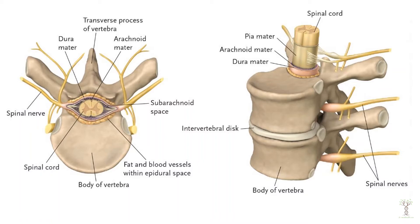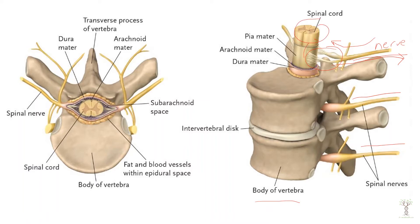So we're going to look at the spinal cord and how sensory information is coming in and how motor information is going out. This diagram is just to orient you to where the spinal cord is located with respect to the bones that surround it. The vertebrae are the bones that protect the spinal cord. As the spinal cord moves down through the center of all the vertebrae, the spinal nerves branch off in between each vertebra. Each spinal nerve carries sensory information to the spinal cord and motor information out from the spinal cord to the body.